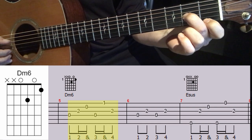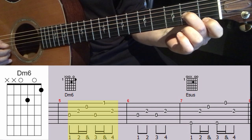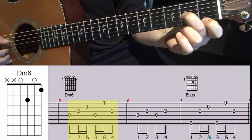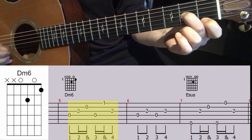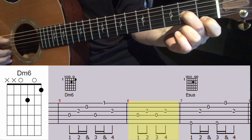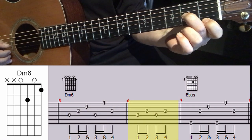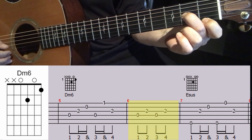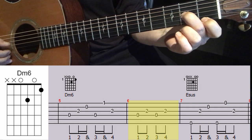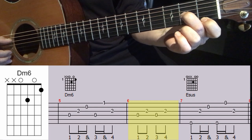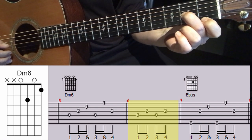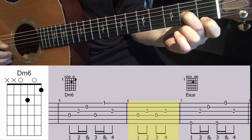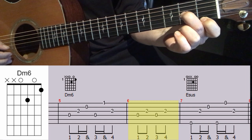And it's counted like this: one, rest, two, and three, and four, rest. Measure six is just this: thumb, thumb, thumb, thumb, on strings four, three, four, three. And that's counted one, rest, two, rest, three, rest, four, rest.